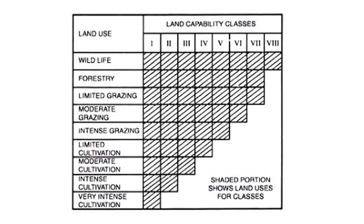Looking further at the diagram — for wildlife purposes, land capability Classes 1 through 8 are all suitable, meaning for wildlife we can go from Class 1 to Class 8. But for very intense cultivation, we can only go for land capability Class 1. In this way, you can easily remember all land capability classes.